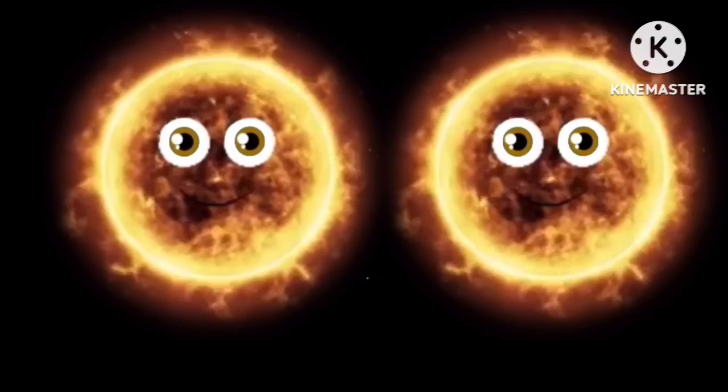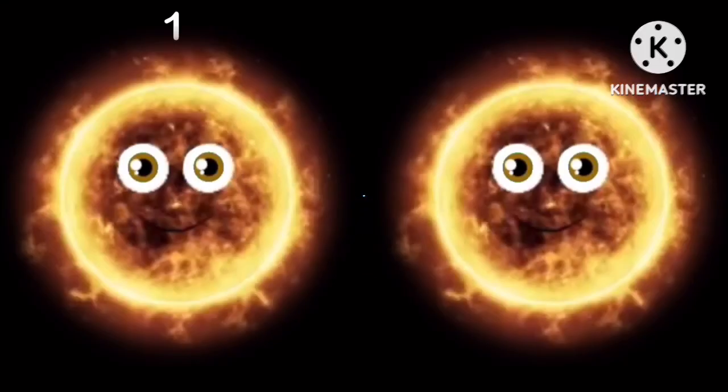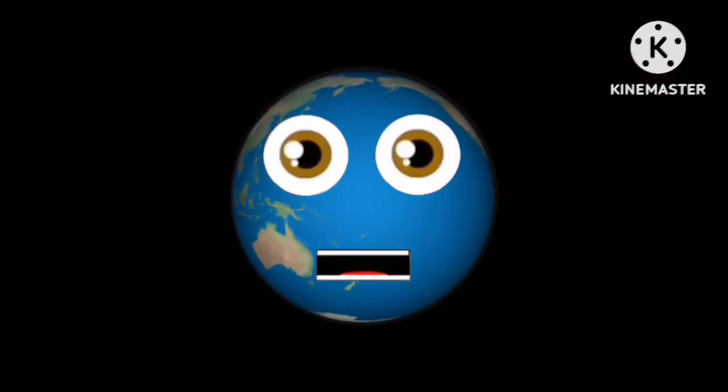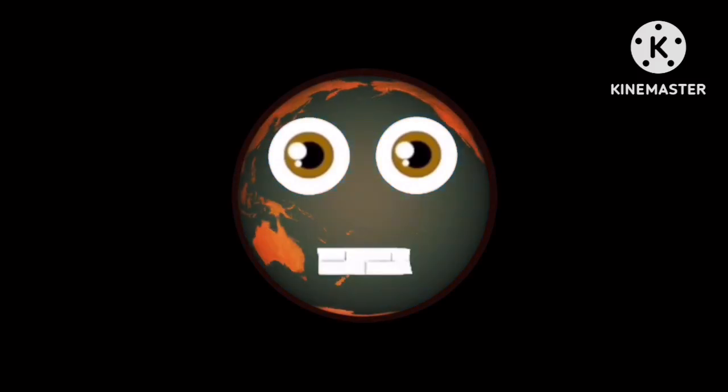But if the Earth only orbited one of these stars, that wouldn't be good due to its orbit around the star. Earth would orbit between the stars. The double radiation would hurt the Earth. Earth wouldn't have night for quite some time. Nothing could stop the bad sunburn from that shine.